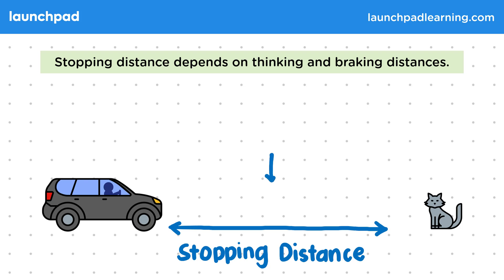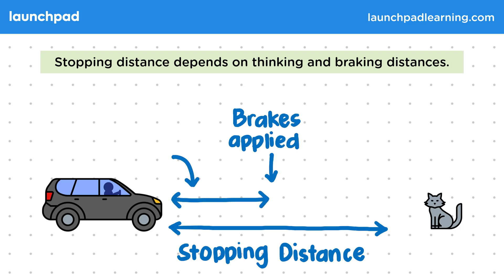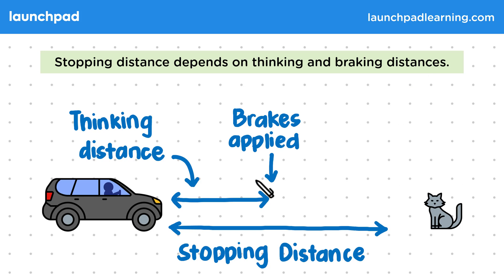We split this distance up based on the distance when the brakes are actually applied. Before this point, we have the thinking distance. This is the distance travelled between the danger appearing and the brakes being applied. We can calculate this using a driver's initial speed and their reaction time, or we can measure the distance directly.